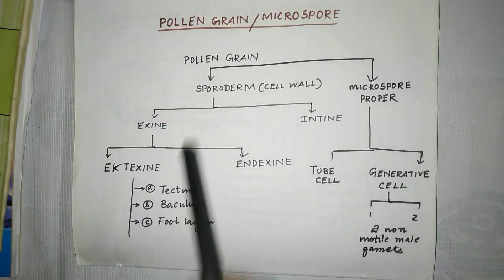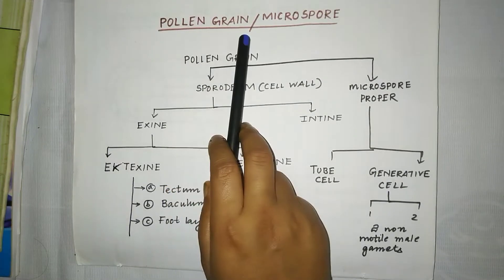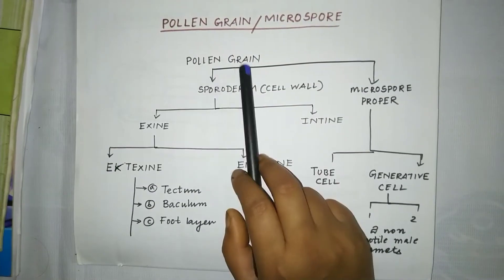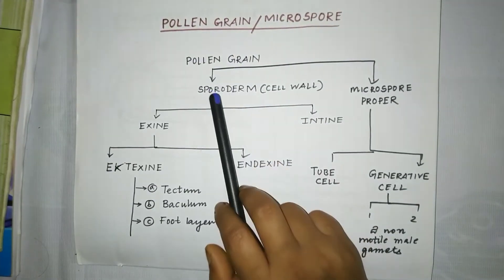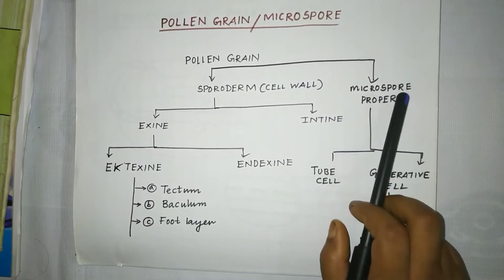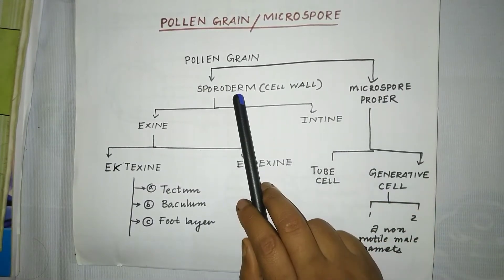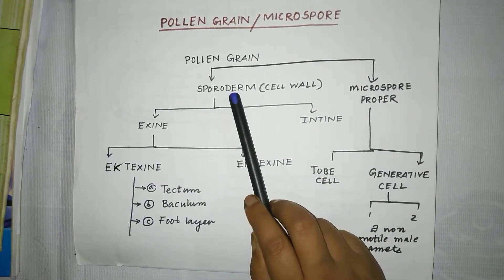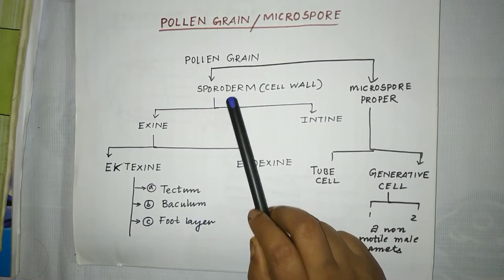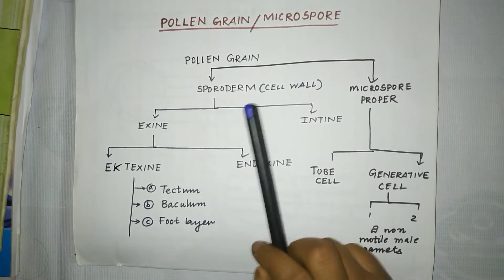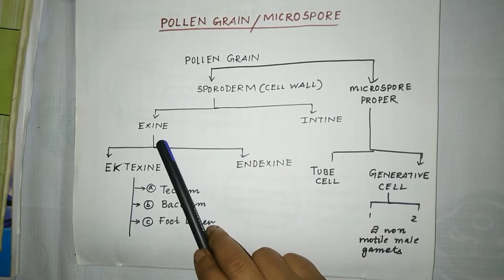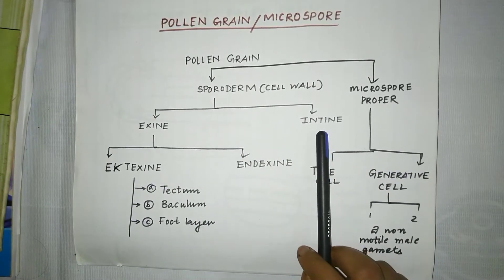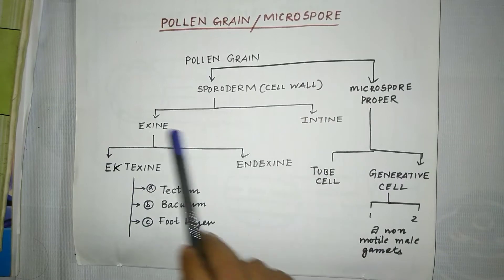Today we will discuss about pollen grain, which is also known as microspore. The pollen grain is made up of sporoderm and microspore proper. The cell wall of the pollen grain is known as sporoderm. The sporoderm is divided into two parts: exine and entine. Exine is the outermost part and entine is the innermost part.